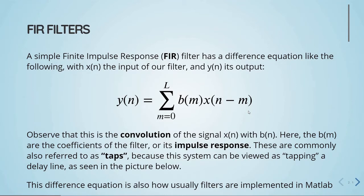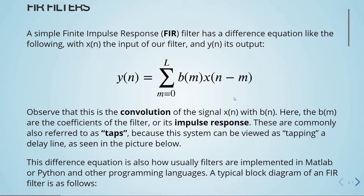FIR filters — the finite impulse response. A simple FIR filter has a difference equation where x is the input and y is the output. We have the sum going from zero to capital L of b times x. Observe that this is the convolution of the signal x with b, where b are the coefficients of the filter or its impulse response. These are commonly also referred to as taps, because the system can be viewed as tapping a delay line, as seen in the picture.